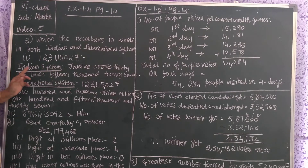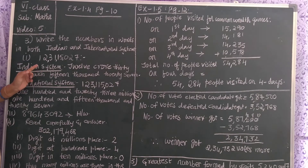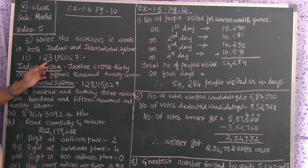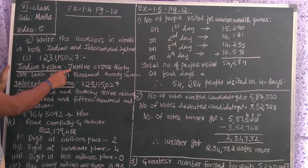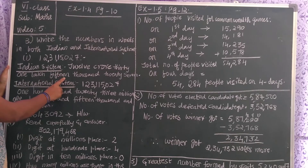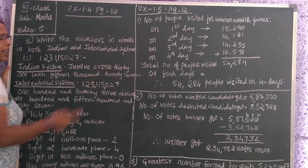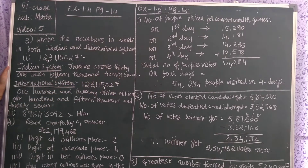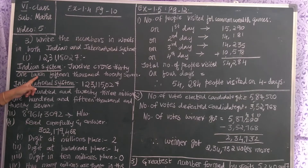Now, in Indian system of numeration, I am writing this number. How am I writing? Twelve crores, thirty-one lakhs, fifteen thousand, twenty-seven. This is Indian system of numeration.